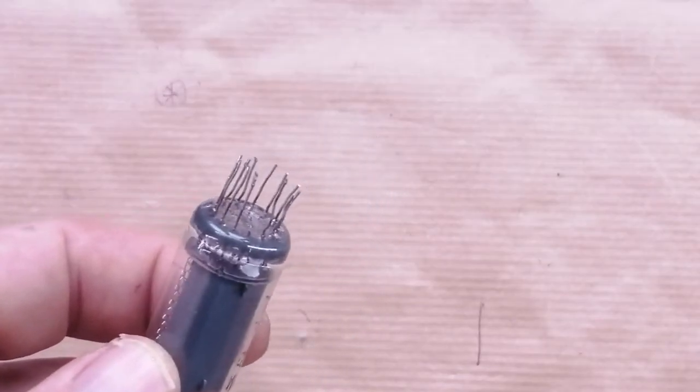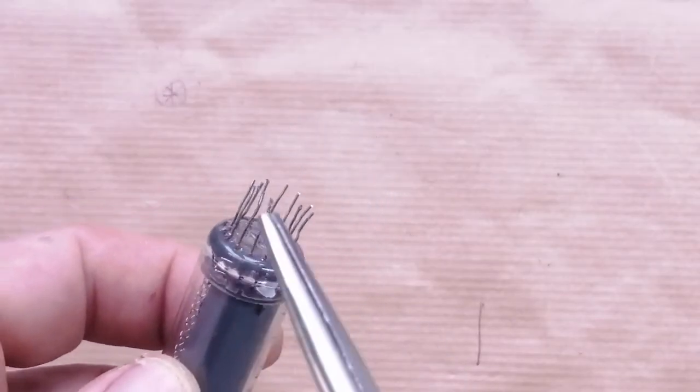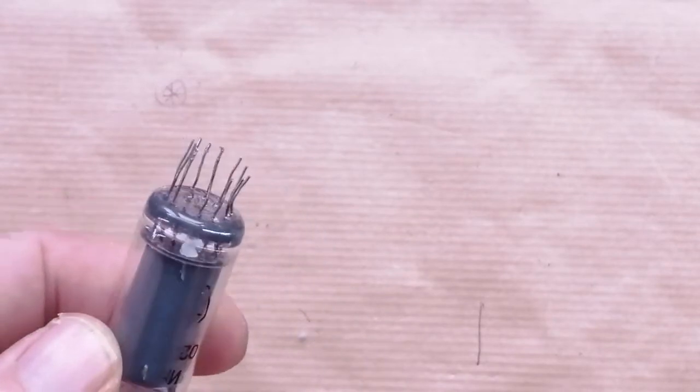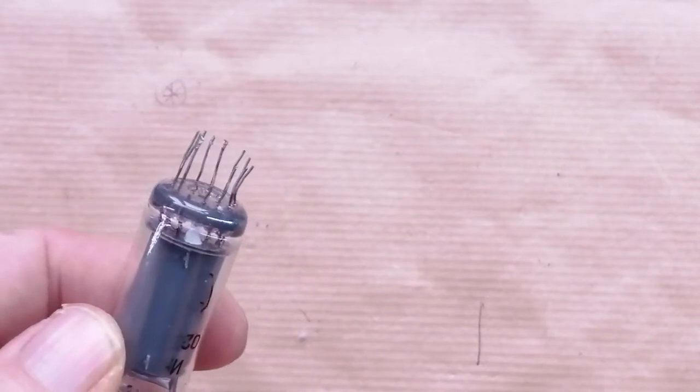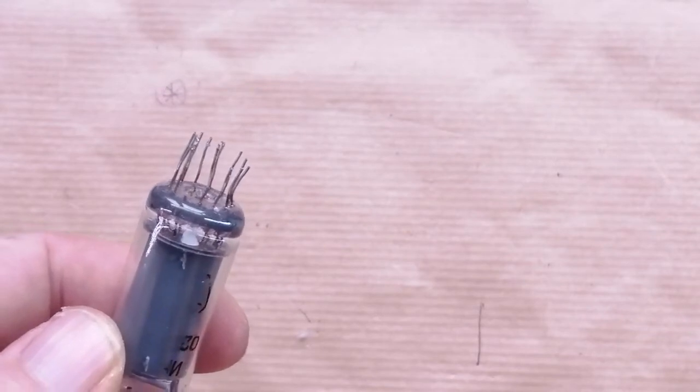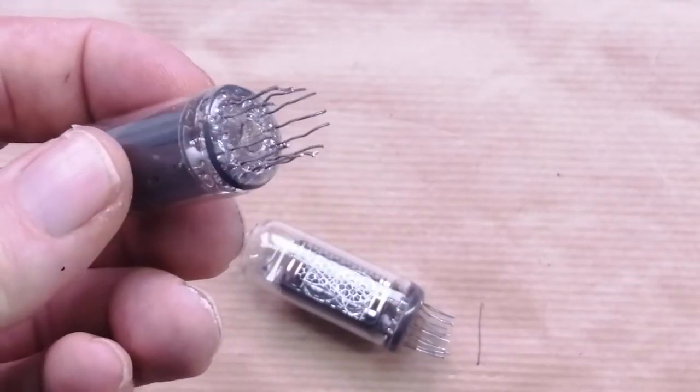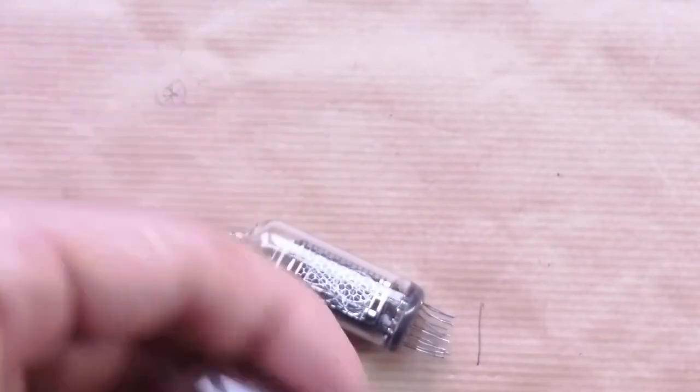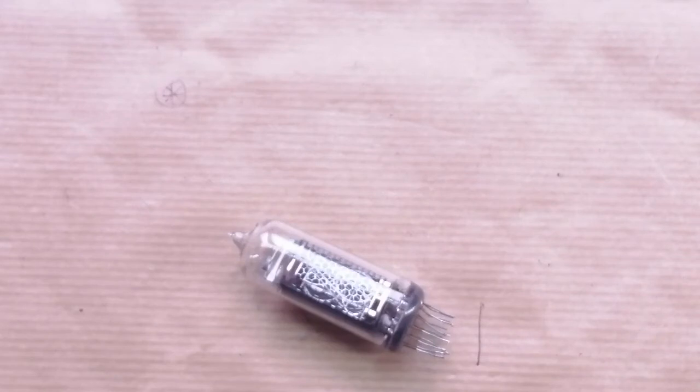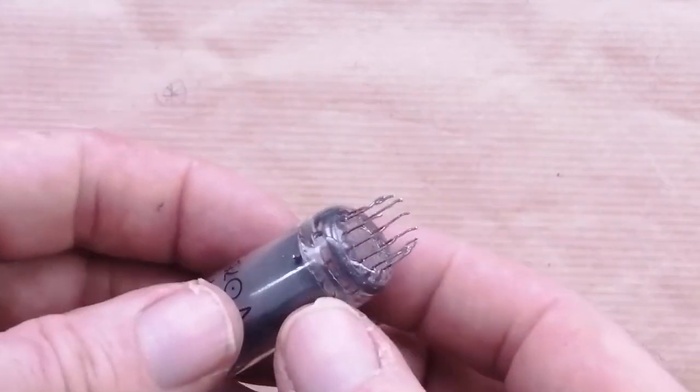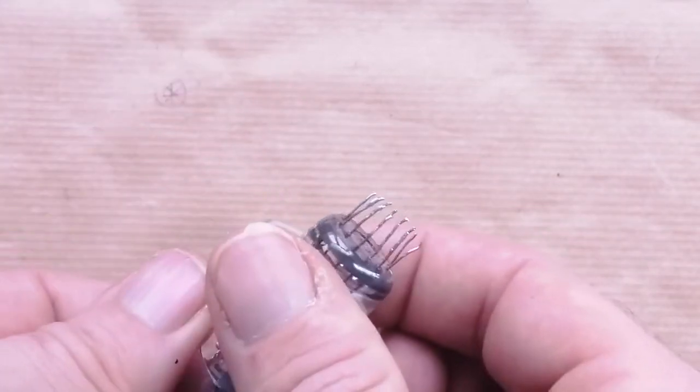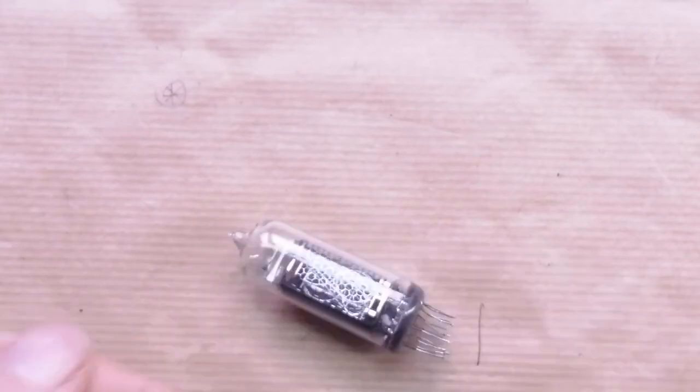Just one other thing to note, you can see here that a pin has been snipped out. This is one of the decimal points. And often you'll find tubes where one or both of the decimal points have just been removed. This doesn't mean your tube is in any way defective. It just means it's been removed. So some of them have them, some of them don't.